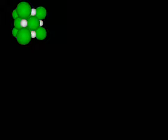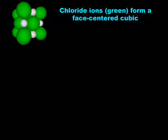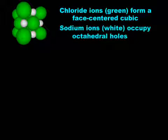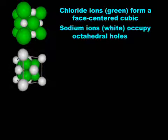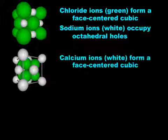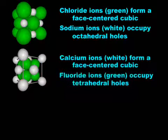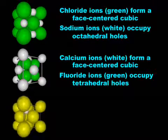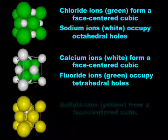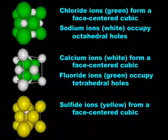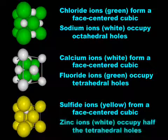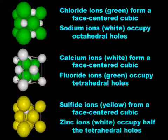Let us take a moment to review. The halite or sodium chloride structure can be viewed as a close-packed array of chloride ions with the sodium ions in all of the octahedral holes. The fluorite or calcium fluoride structure can be viewed as a close-packed array of calcium ions with the fluoride ions in all of the tetrahedral holes. Last, the sphalerite or zinc sulfide structure can be viewed as a cubic close-packed array of sulfide ions with the zinc ions in half of the tetrahedral holes.